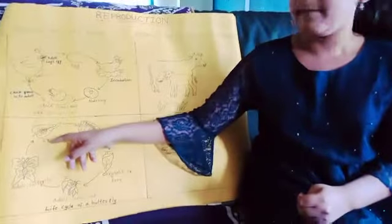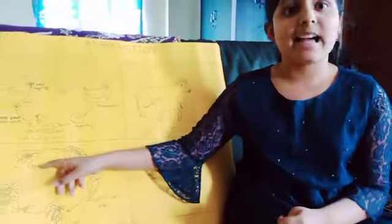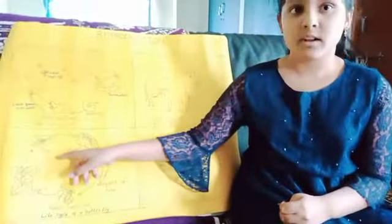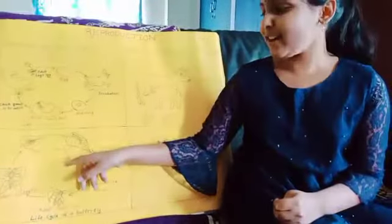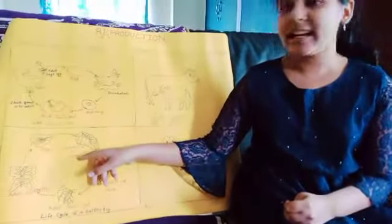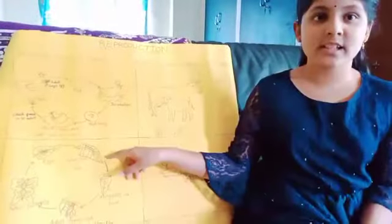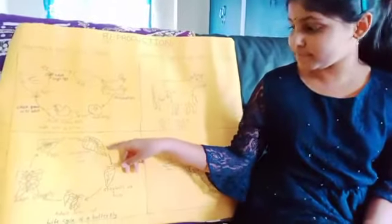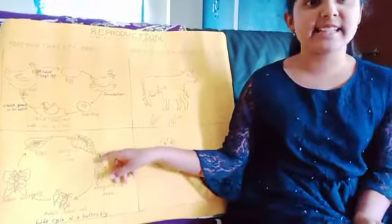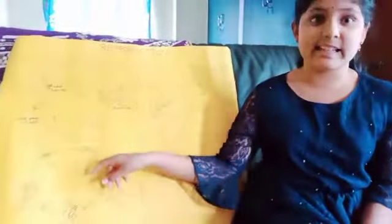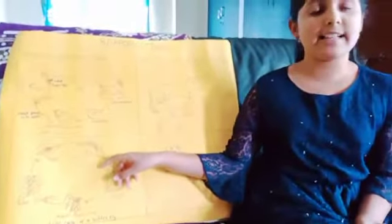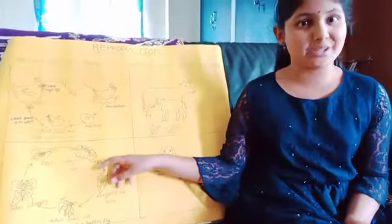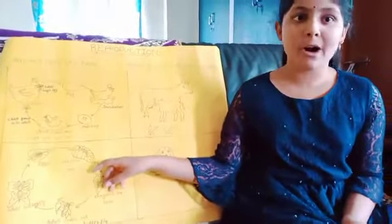Butterfly. A butterfly lays hundreds of eggs at a time. The young ones are called larva. It sheds its skin several times while it grows. Shedding of skin is called molting.